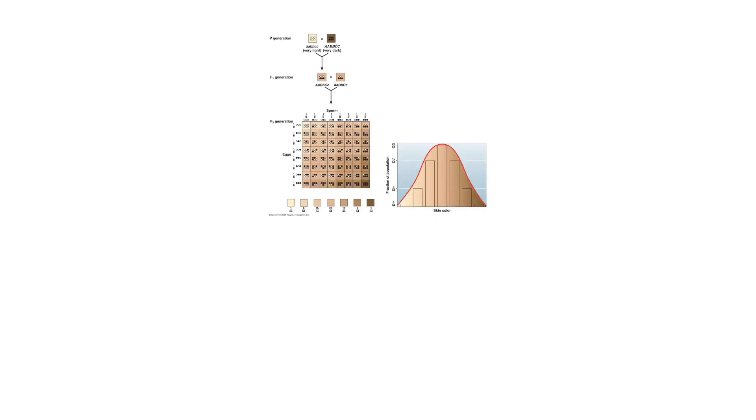If we consider skin color, so here we're looking at two individuals, one who is homozygous for all dominant alleles and has very dark skin and one who is homozygous for all recessive alleles and has very light skin. If we look at the offspring of these two individuals in the F1 generation, as we've come to expect, the individuals are completely heterozygous. And in this case, they have an intermediate phenotype.